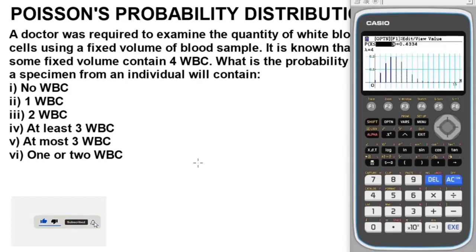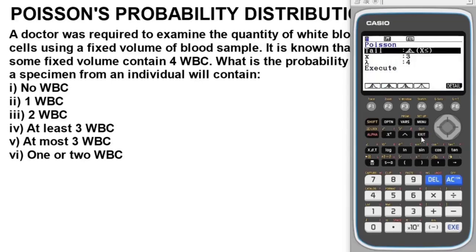To get the result for the last part, we have to find what is the probability that a specimen from an individual contains one or two white blood cells. In probability, when you talk about 'or', the word 'or' signifies addition. So we have to add the probability that a specimen from an individual contains one white blood cell plus the probability for two white blood cells.